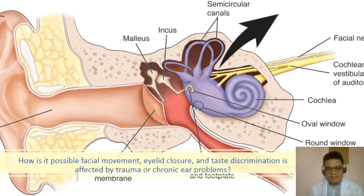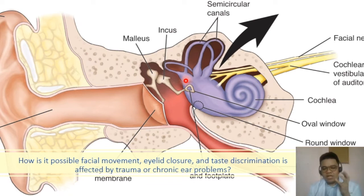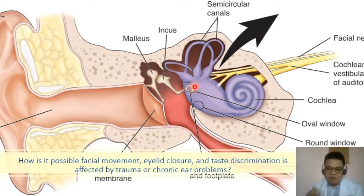Facial movement, eyelid closure, and taste discrimination can be affected by trauma or chronic ear problems because the facial nerve traverses above the oval window of the middle and inner ear. Patients with chronic otitis may experience pain when closing their eyes or moving their face. Ear problems can also impair taste because part of the facial nerve runs toward the ear.